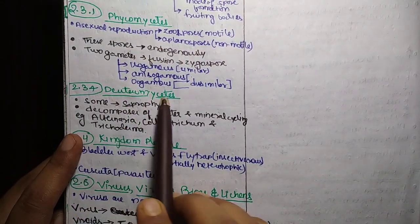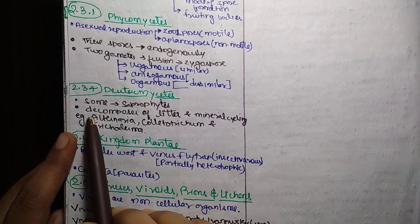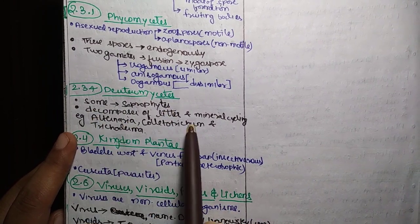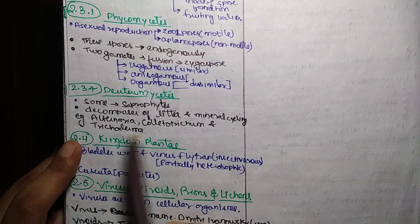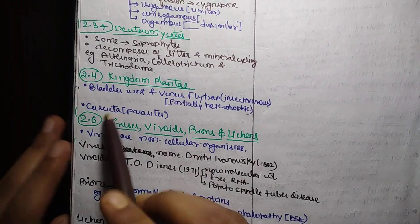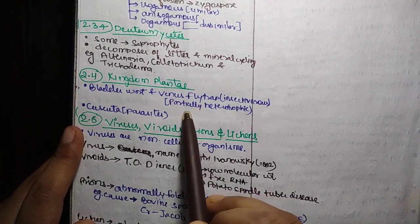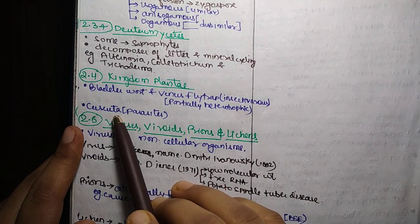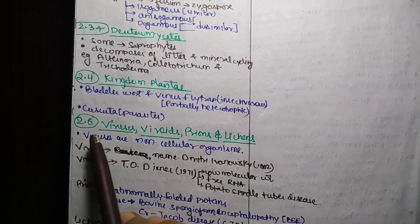Now, next important point is Deuteromycetes. Decomposer of litter and mineral cycling. For example, Alternaria, Colletotrichum and Trichoderma. Kingdom Plantae. Bladderwort, Venus flytrap, Insectivorous. Partially heterotrophic. Cuscuta. This parasite is a parasite.